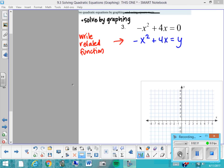So we're looking at an equation where negative x squared plus 4x equals zero. And we're wondering, well, what can x equal? And in order to do that, we write the related function, where y equals negative x squared plus 4x. Step number two is to graph it.